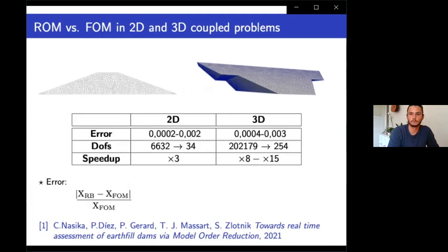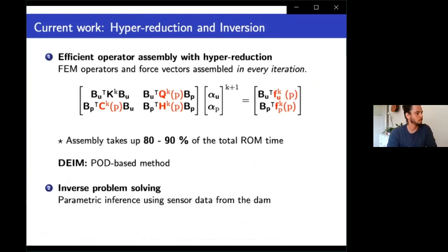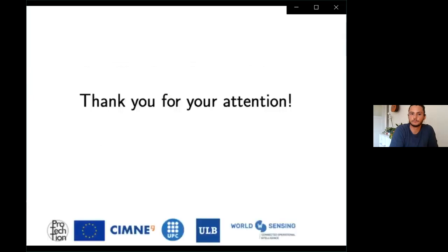This study and our results are detailed in our article, which has not yet been published, but a non-reviewed preprint can already be found online. Currently, we are dealing with two issues. First, assembling the finite element operators for this time-dependent non-linear problem takes up most of the time the reduced order model needs to run, so we are applying hyper-reduction to boost the efficiency of the reduced model further. Second, as a step toward data assimilation, we are solving inverse problems — basically parameter identification problems — using the developed reduced order model. Thank you very much for your attention.